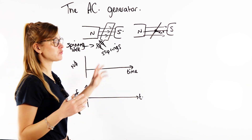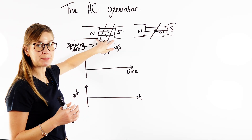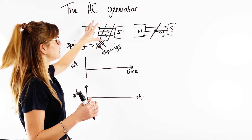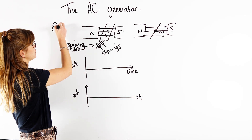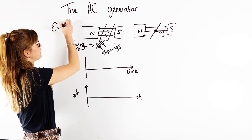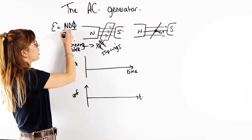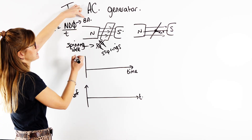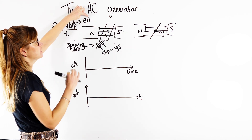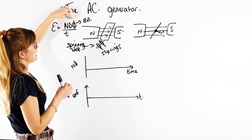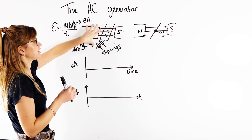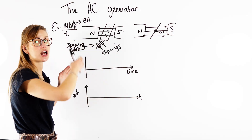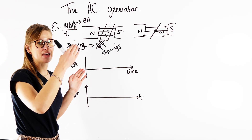Inside the generator, we've got that spinning wire moving through a permanent magnetic field. Anytime we have a moving wire inside a permanent magnetic field, we get an EMF induced because of Faraday's Law. The EMF induced is directly proportional to the rate of change of magnetic flux linkage. So because we're constantly rotating that wire, we're constantly changing the number of field lines cutting through it, and that's why we get an EMF induced.